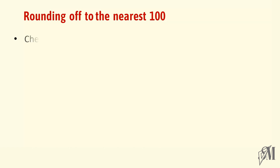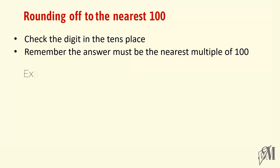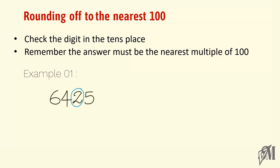Moving on to rounding off to the nearest hundreds: check the digit in the tens place, and remember the answer must be the nearest multiple of hundred. Let me tell you how to round off 6425 to the nearest hundred. The place we should pay attention to is the tens place. In this case it is 2. Since 2 is less than 5, the digits 2 and after are cancelled and we put zeros instead. The answer becomes 6400.